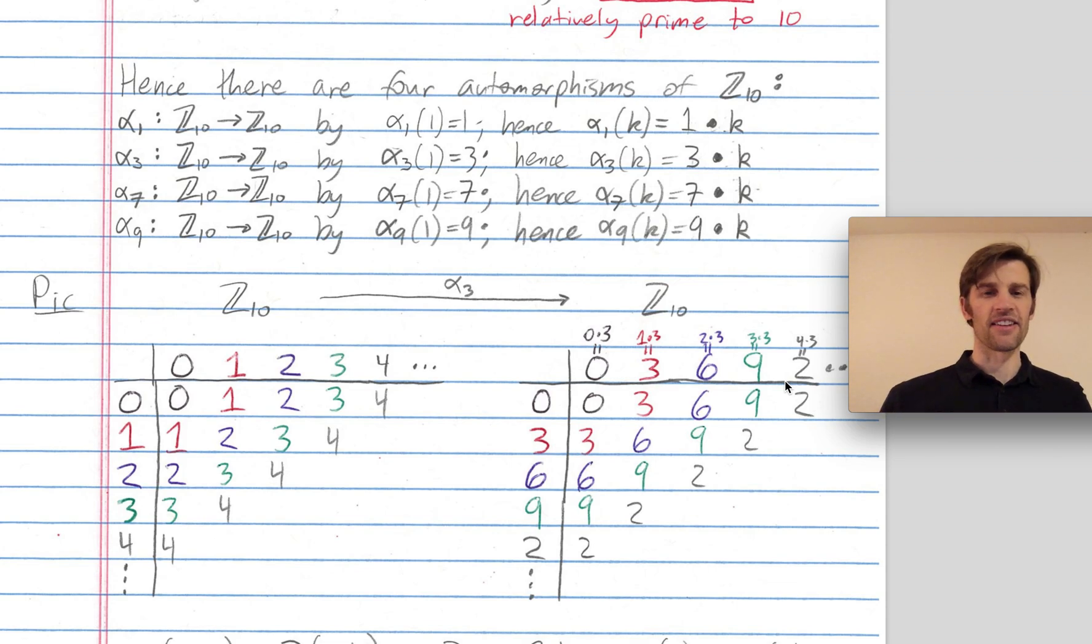It satisfies the property you expect of any automorphism or isomorphism. Namely, if you combine two elements like 2 and 1 you combine to get 3 in Z mod 10 and then map that over to get 9. That's the same thing as mapping 2 and 1 over to get 6 and 3, and then combining them in the second copy of Z mod 10 again to get 9.